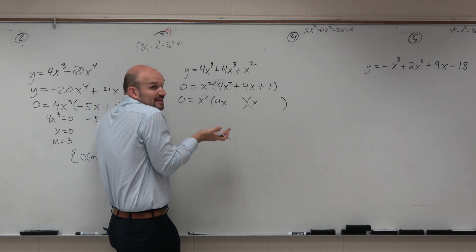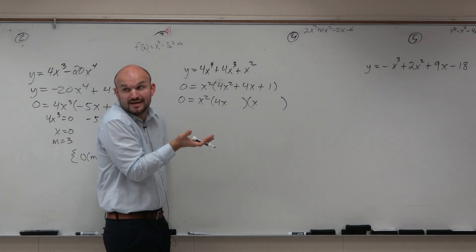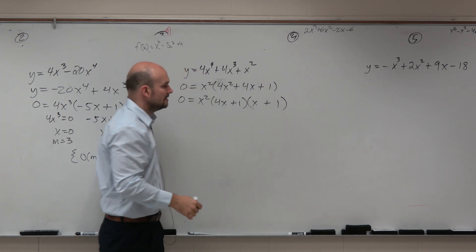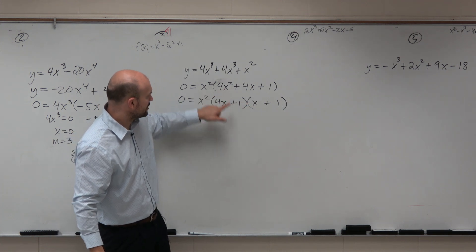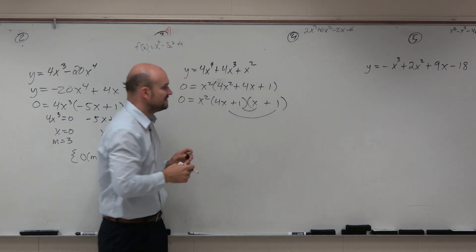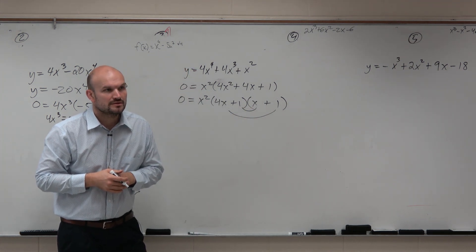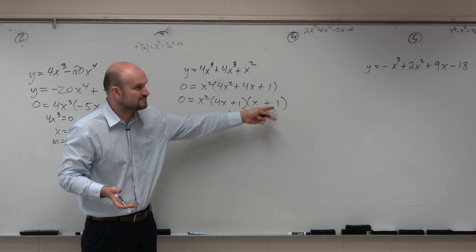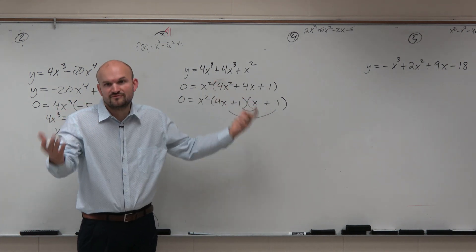What two numbers multiply to give you 1? You only got two options: 1 and 1 and -1 and -1. So let's just plug in 1 and 1. We obviously know the first two terms work. The last two terms don't work. And if we were to multiply the inner and the outer, would that give us 4x? No, it gives us 5x. 1 times x is x. 4x times 1 is 4x. 4x plus 1x is 5x.